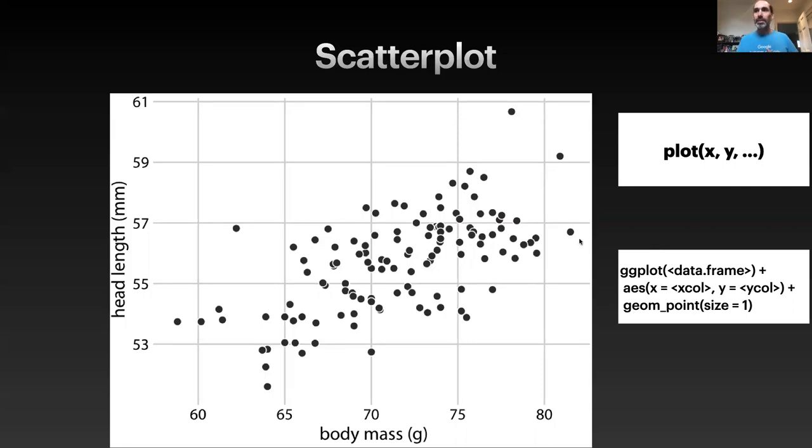The ggplot equivalent—you have to specify the X and Y columns as part of the aesthetic, and then since I'm making a scatter plot with points, I'm using geom_point. You can change the size and color and stuff like that. So this is our most basic vanilla scatter plot which helps us understand how two variables are related.